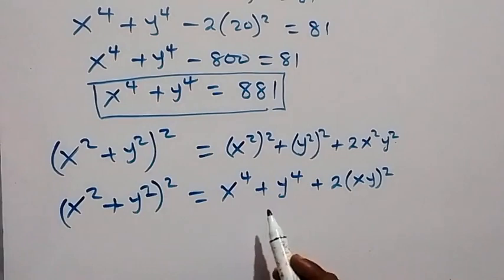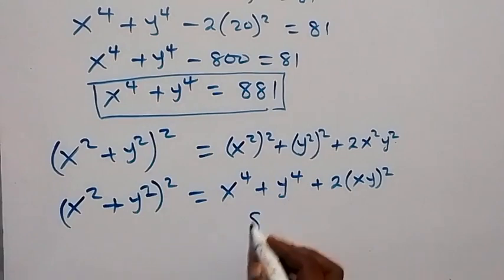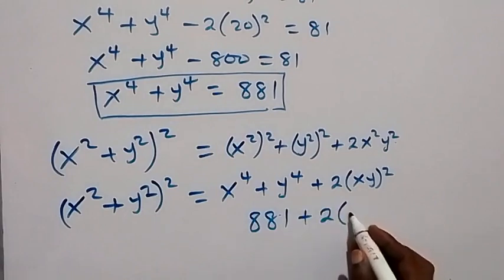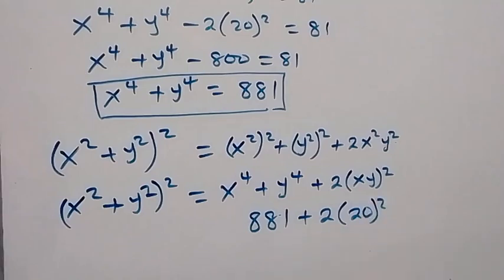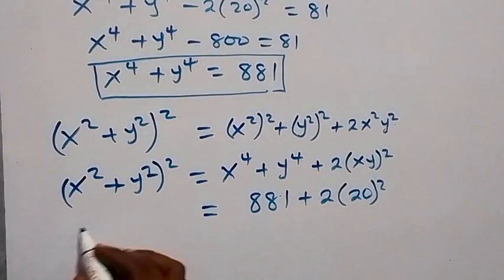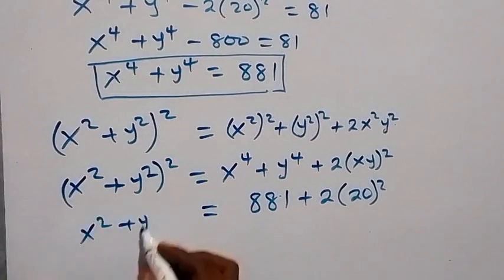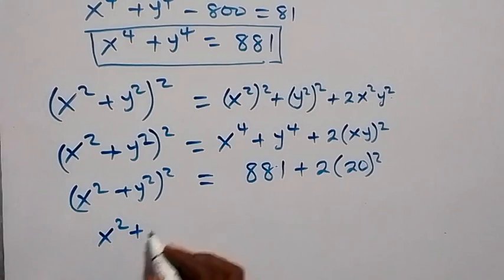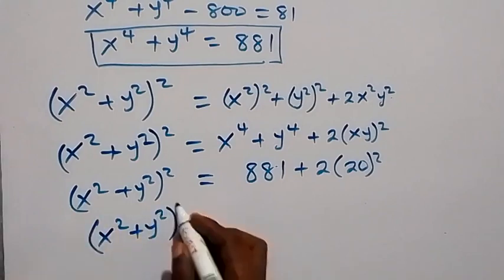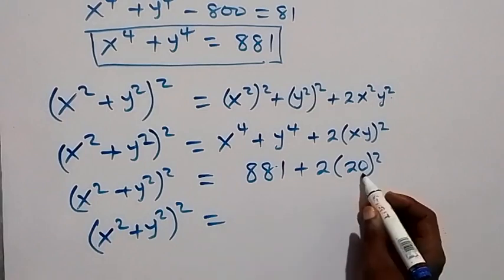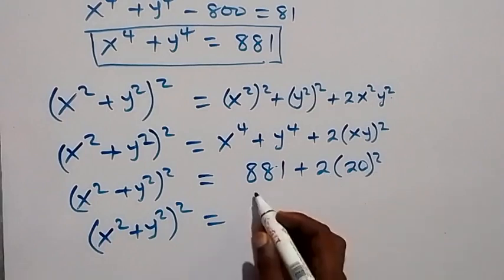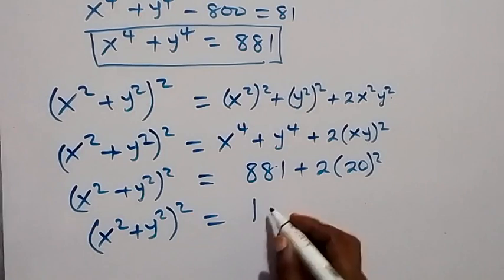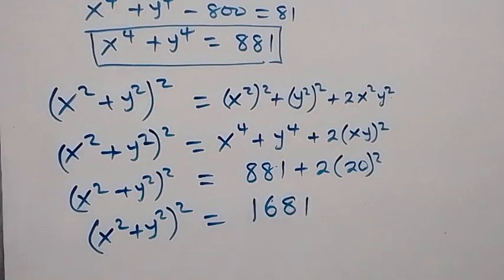We have x raised to power 4 plus y raised to power 4, which is 881, so we write 881. Then plus 2 times xy — from equation 2 that is 20 — squared. So x squared plus y squared all squared equals 881 plus 2 times 400, which is 800. So 800 plus 881 gives us 1681.